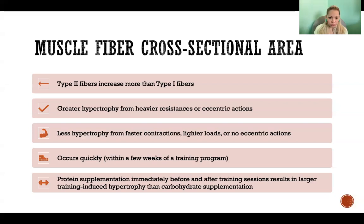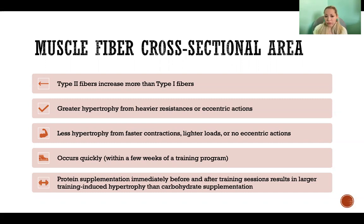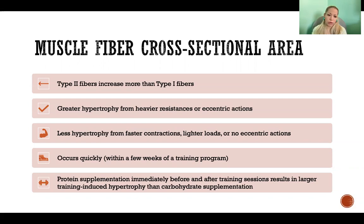There's greater hypertrophy in response to heavier resistance and to eccentric actions compared to concentric. There's less hypertrophy from faster contractions, lighter loads, or if there's training without eccentric actions — which is actually quite difficult to do, but it is possible. So if you remove the eccentric actions from the workout, that results in less hypertrophy. Plyometric training and explosive training, where you necessarily have to use lighter loads because you are contracting at a faster rate, is going to result in less hypertrophy.